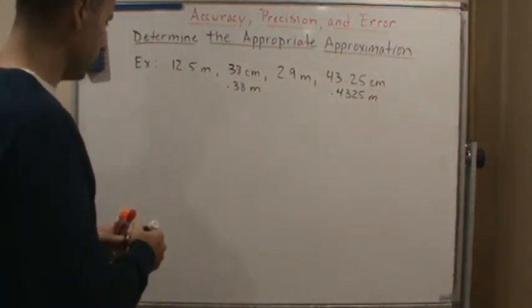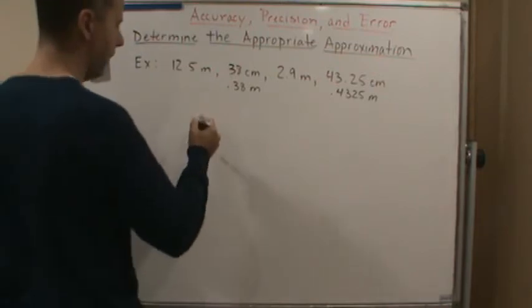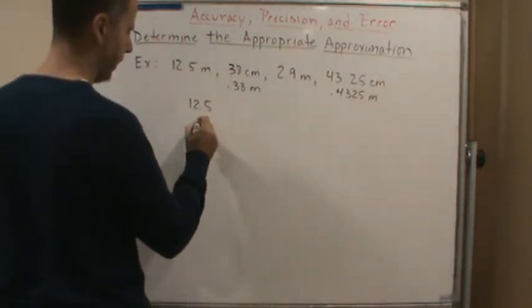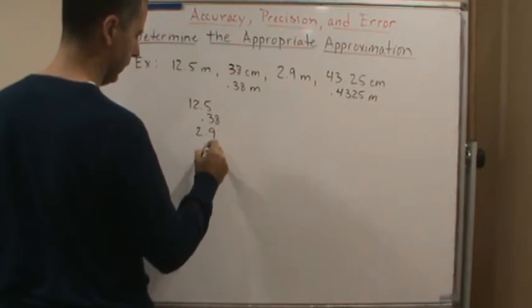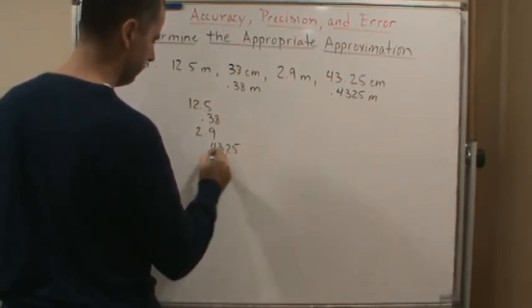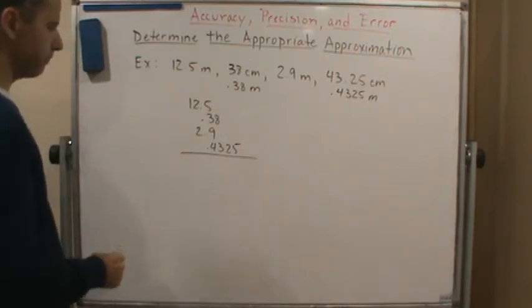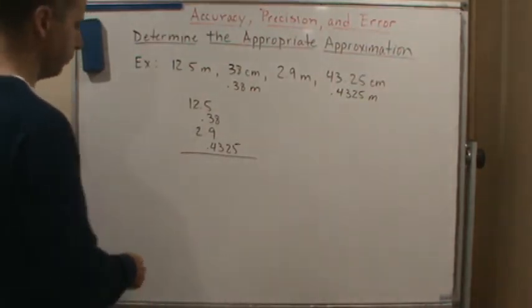So now we're just going to add them up. So we get 12.5, 0.38, 2.9, and 0.4325. And so when we add them up, what do we get?